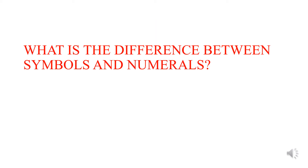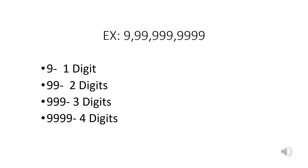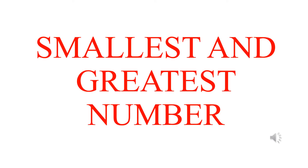What is the difference between symbols and numerals? For example, take 9, 99, 999, 9999. The number 9 has one digit, 99 has two digits, 999 has three digits, and 9999 has four digits. Now let us see the smallest and greatest numbers.